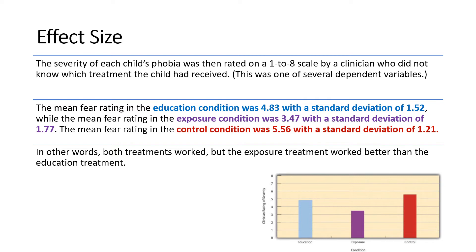In this research, phobia was rated on a one-to-eight scale by the clinician based on the treatment the children received, along with several other dependent variables. There are three categories of results. The first category is the education condition, which has a mean value of 4.83.